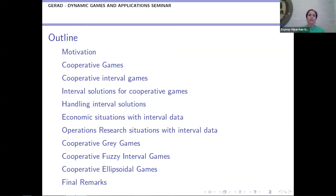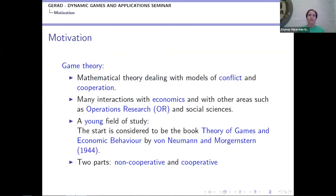As a motivation: game theory is a mathematical theory dealing with models of conflict and cooperation. It has a large number of papers related to economics and operations research situations. But compared with other mathematical theories, it is a young field of study. The foundational work is considered to be the book 'Theory of Games and Economic Behavior' by von Neumann and Morgenstern in 1944.